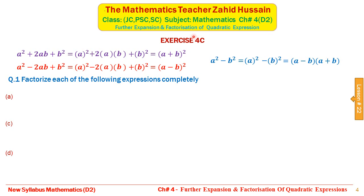We are going to solve the questions of Exercise 4c. Question 1: Factorize each of the following expressions completely. In part (a), look — there are three terms: a² which can be written as a perfect square, and 49 which is also a perfect square since 49 is the square of 7. So these two terms can be written as perfect squares. Now we check the middle term as the double product.